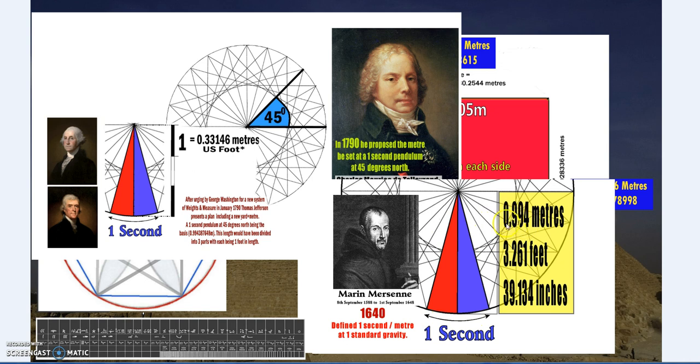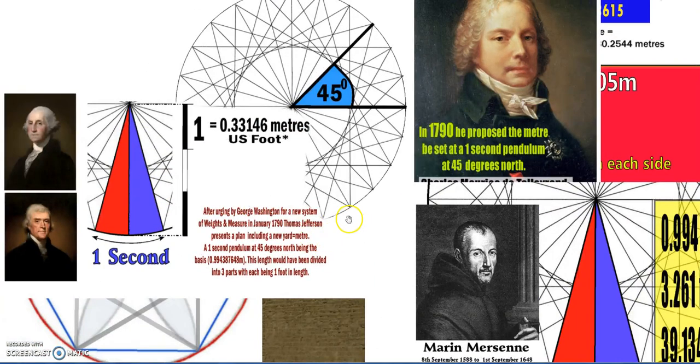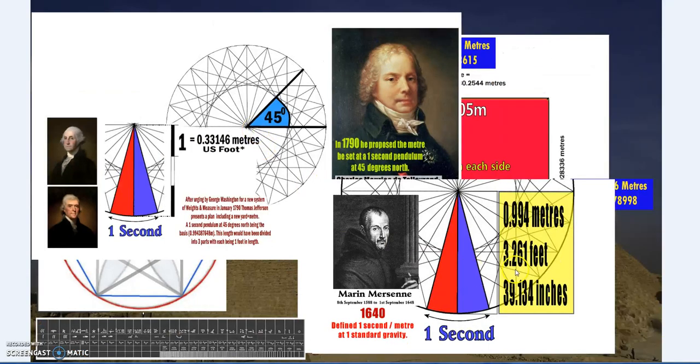At the same year, George Washington and Thomas Jefferson were planning on—the American foot is still the English foot, but when they were setting up the USA, they wanted to change the US foot to be 0.33146 meters.